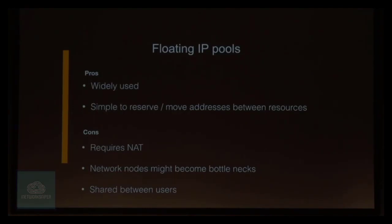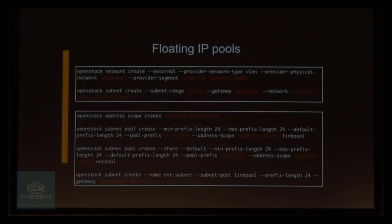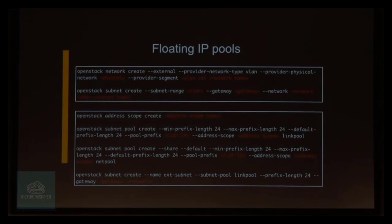Setting up floating IP pools is pretty basic. You create an external network, specify the network type and which physical network it should be connected to, a segmentation ID — usually a VLAN — and then create a subnet on that network. You can also use address scopes to enable routable addresses and mitigate the NAT requirement.